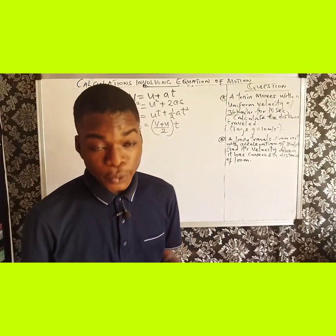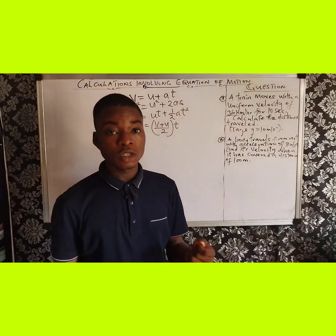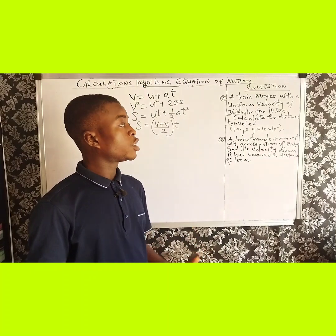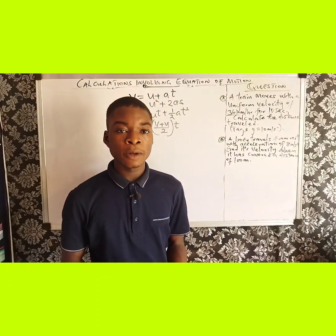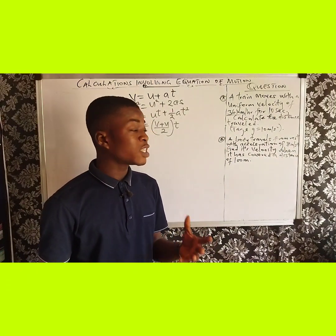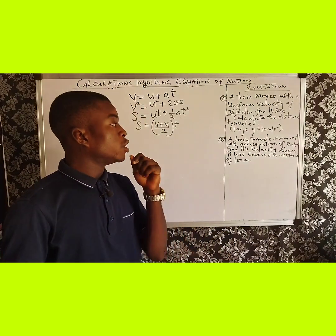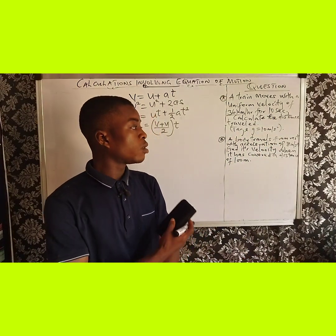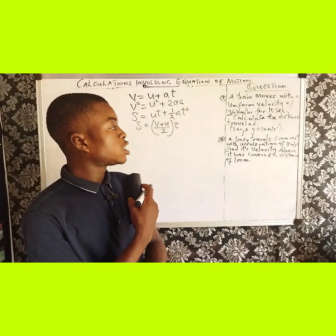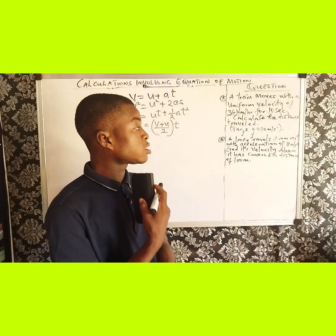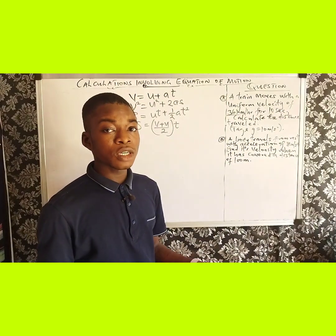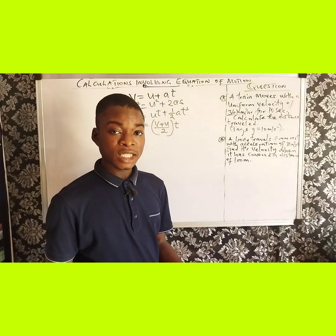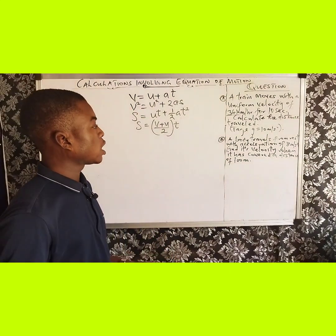These are the four equations that we are going to apply to solve this question. So let's take it one after the other. The first question is that a train moves with a uniform velocity of 36 km per hour for 10 seconds. You are asked to calculate the distance traveled by that train for those 10 seconds. What will be the distance traveled by that train?